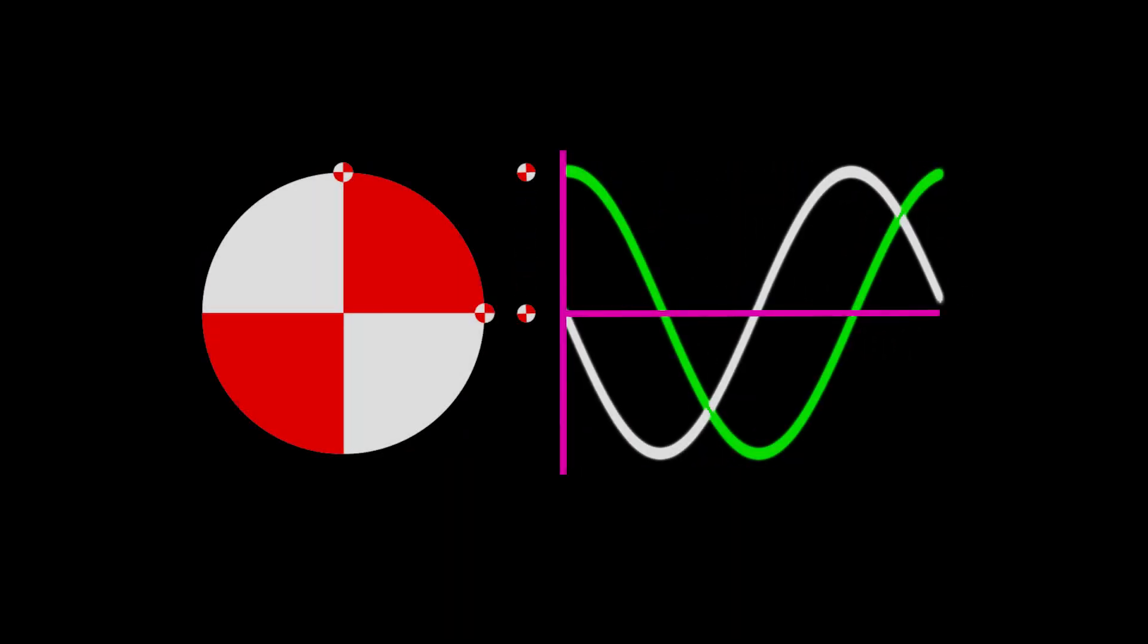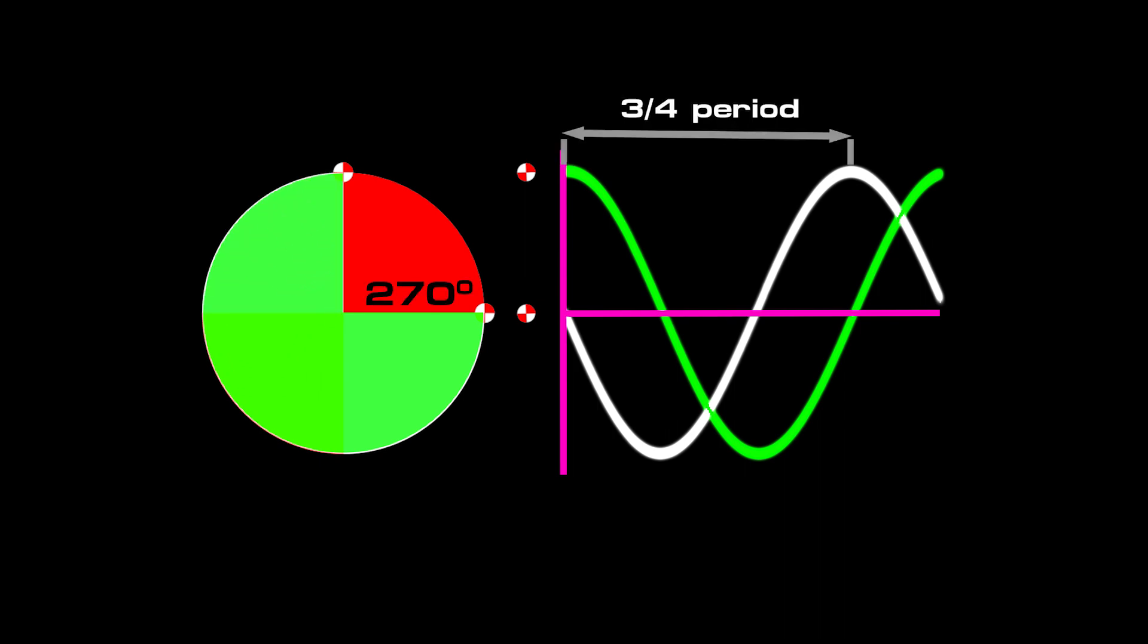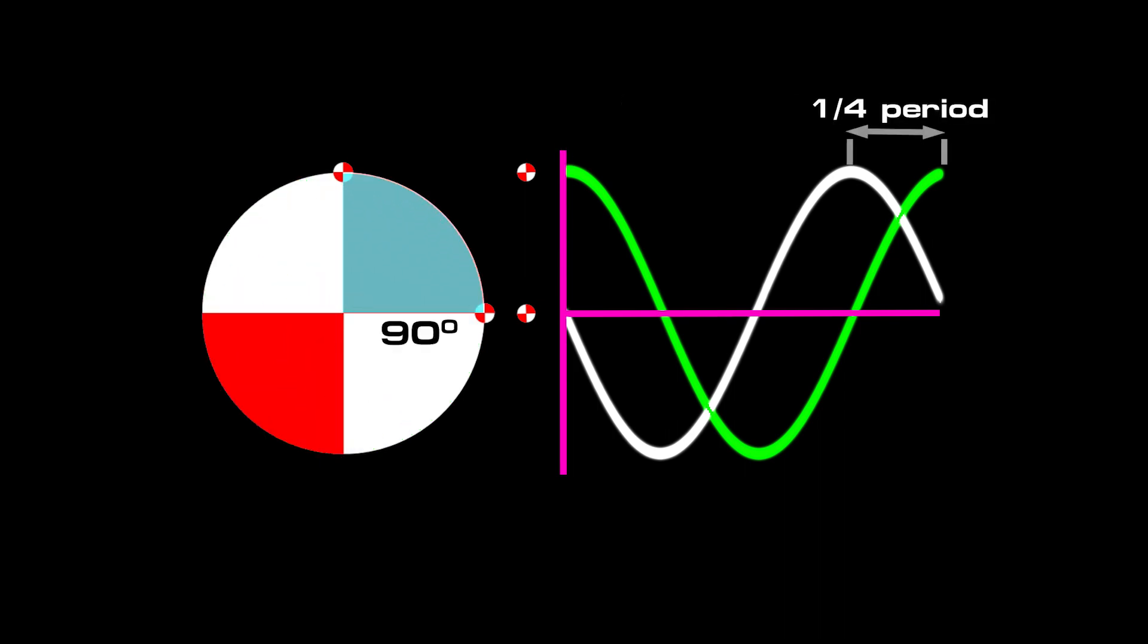Now, a 270 degree phase lag has a corresponding three quarter period time delay, or a 90 degree phase lead with a quarter period time shift.